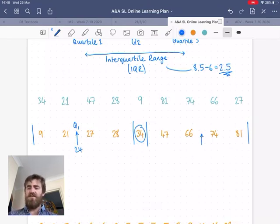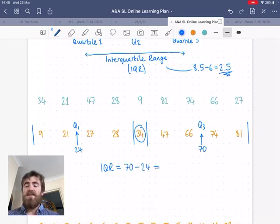So how spread out is, or what's the difference between these two quartiles? Well, we subtract: 70 minus 24 is 46. So that is how spread out the middle two quarters of the list is, and that isn't actually perfectly correct for a list like this.